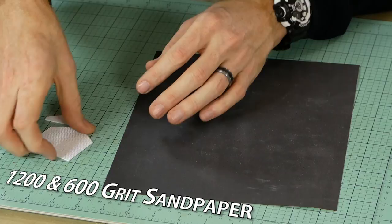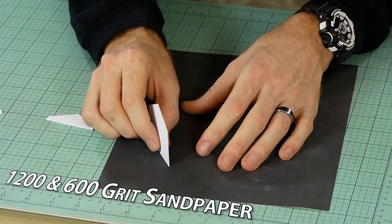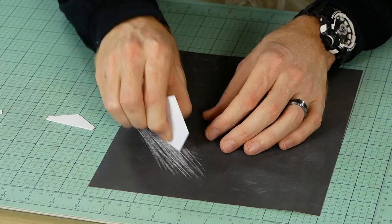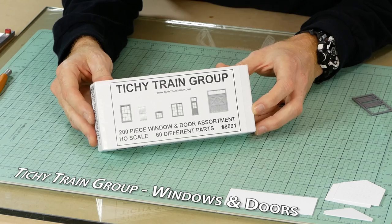Any time you're working with styrene, having some fine grit sandpaper and some small jeweller's files is essential. This sandpaper is 1200 grit and I also use a 600 grit sandpaper as well. Styrene sands very easily so using a very fine grit sandpaper will help avoid accidental over sanding.